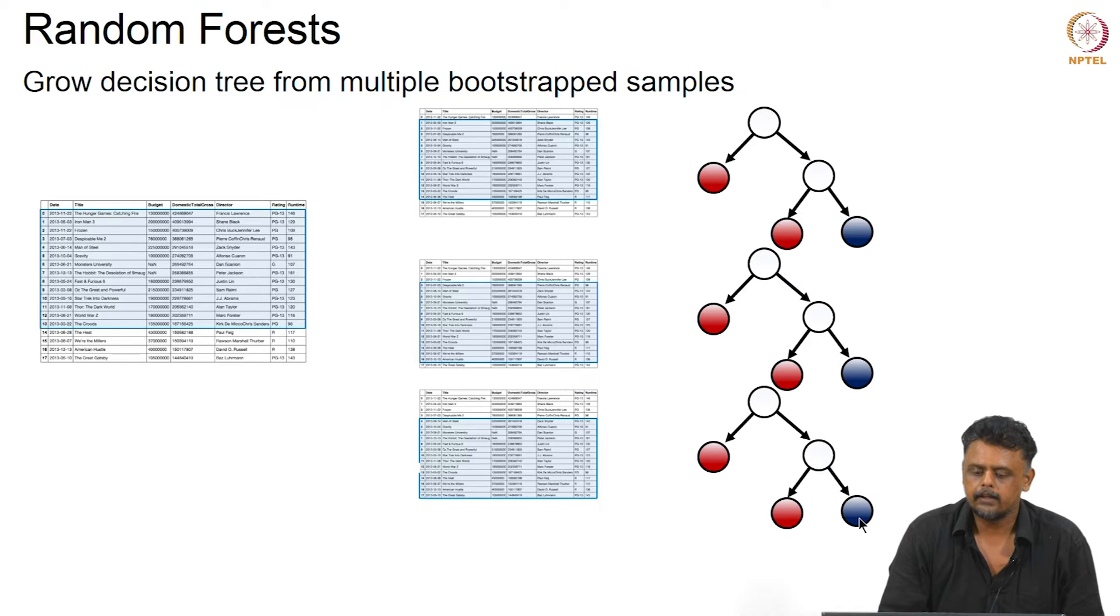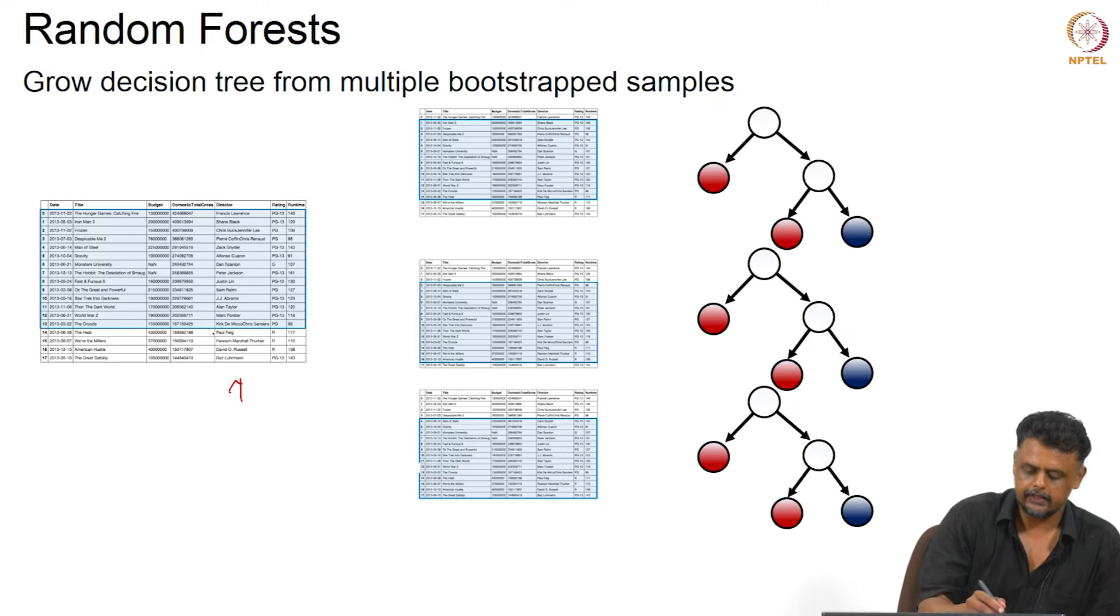With bagging, we grow decision trees from multiple bootstrap samples. Here is our training data, and the blue highlighted area is what we're choosing as the training data from the entire dataset. This is the movie recommendation database—the date of the movie, title, budget, domestic total gross, director, rating, and runtime are given, and we're choosing this subset highlighted in blue as our training data.